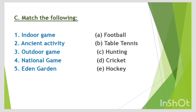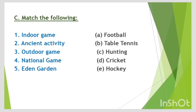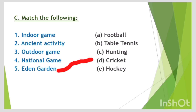Next is match the following. First, indoor game — answer is table tennis. Second, ancient activity — answer is hunting. Third, outdoor game — answer is football. Fourth, national game — answer is hockey. Fifth, Eden Garden — answer is cricket.